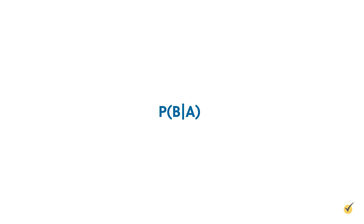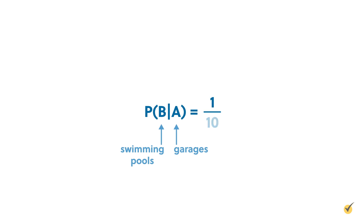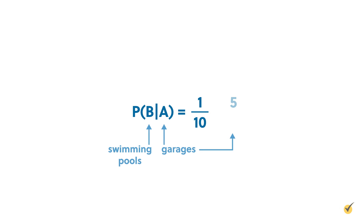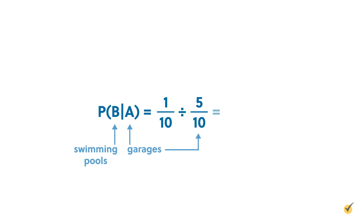In our example problem, the P of A and B is the 10 houses that were sold with both a garage and a swimming pool, out of the 100 total houses. This fraction, 10 over 100, can also be written as 1 over 10. The P of A is the probability of a house being sold with a garage — event A — which is 50 houses out of 100, or 5 out of 10. Now that our formula is complete, we divide 1 over 10 by 5 over 10, and we get 1 over 5, which is equal to 20%, just as we figured out from our diagram.